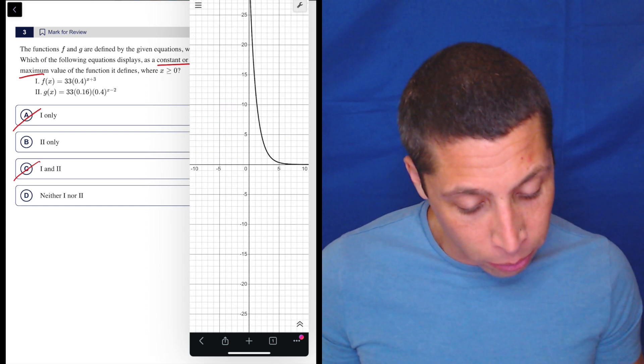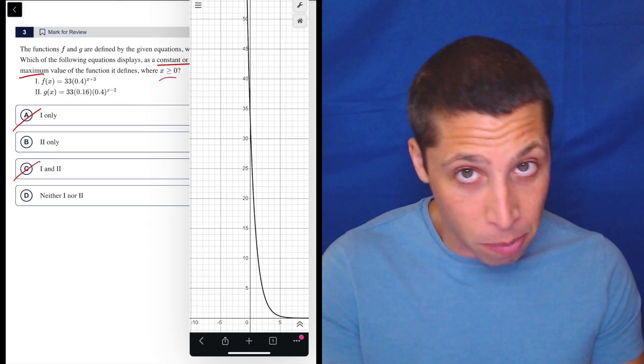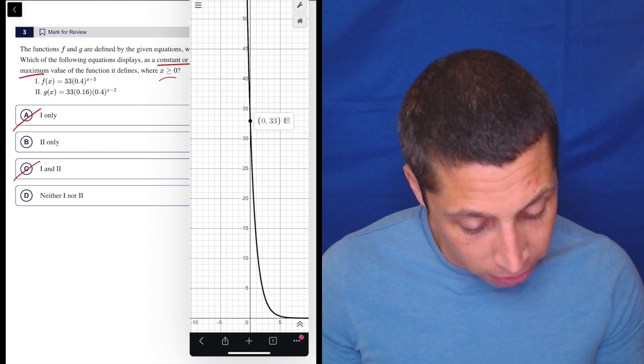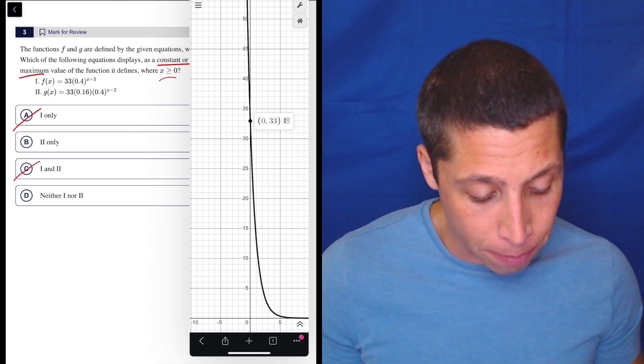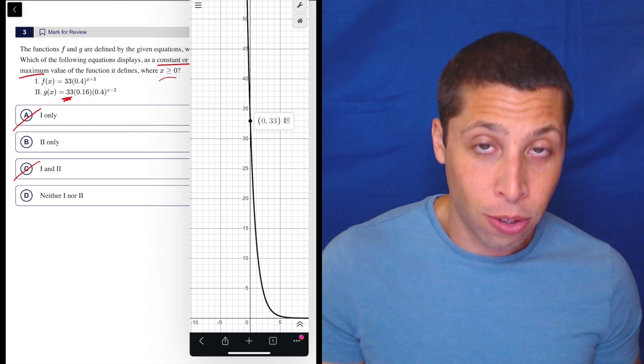otherwise this wouldn't be a maximum because it keeps going higher. But the 0 is my y-intercept. So let's figure it out. I can tap it. And it's 33. And so, well, there's a 33 right there in the equation. So that works.